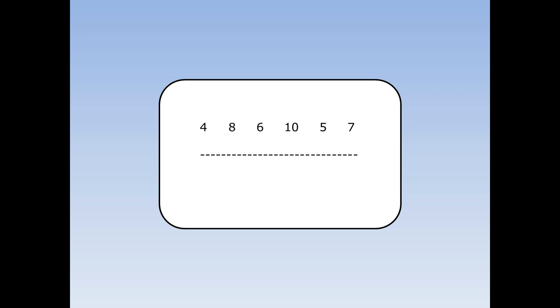For this list of numbers, the biggest number is 10 and the smallest number is 4. 10 take away 4 is 6, so the range is 6.